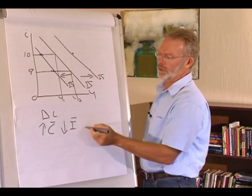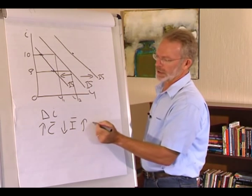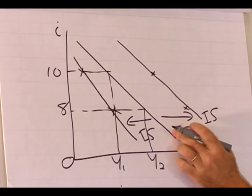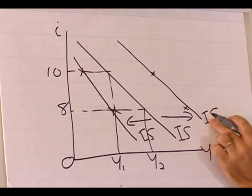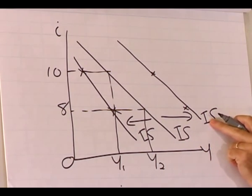An increase in autonomous government spending will increase demand for goods and services. Therefore, the IS curve will shift to the right.